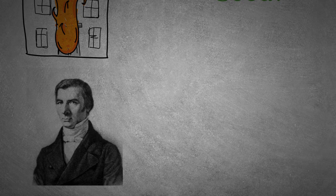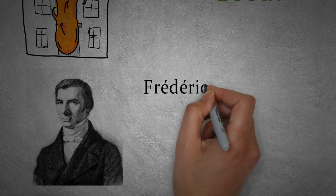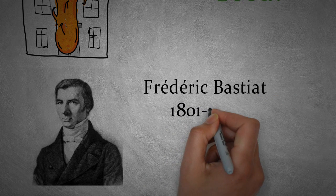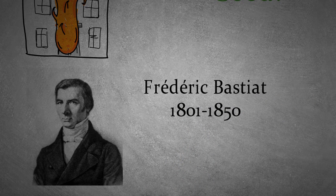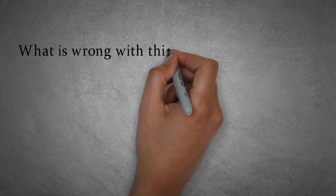The story of broken window is originally written by Frédéric Bastiat, the French political philosopher. This story shows how some politicians, in this case your neighbor, think about the economy and job market. What is wrong with this thinking?